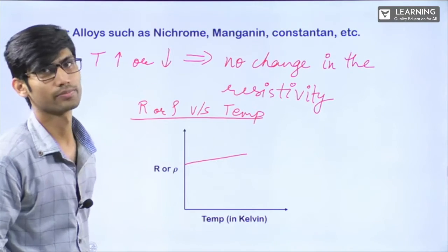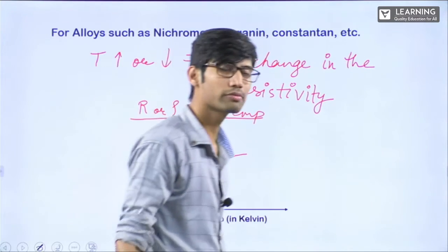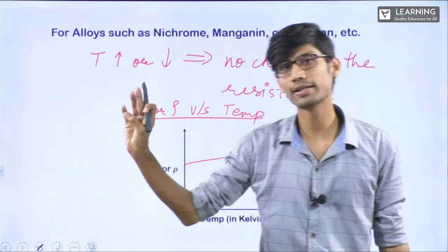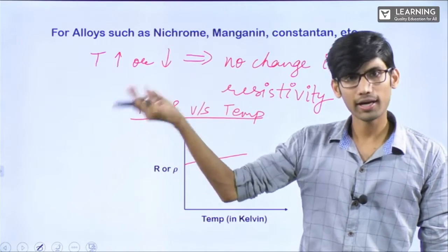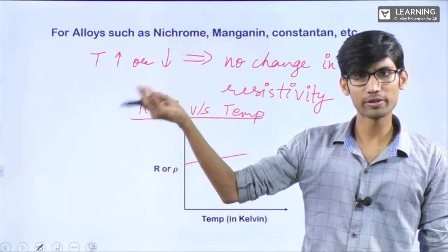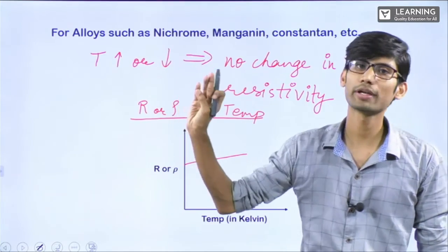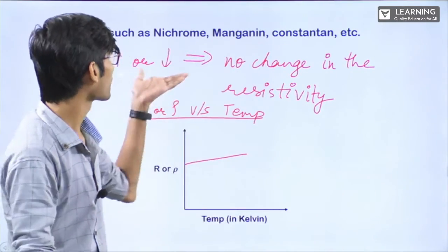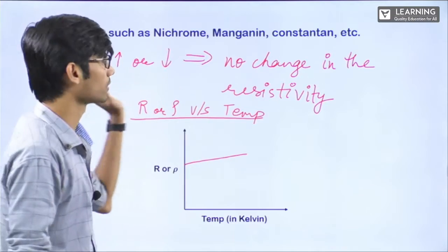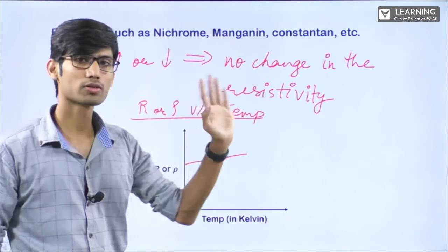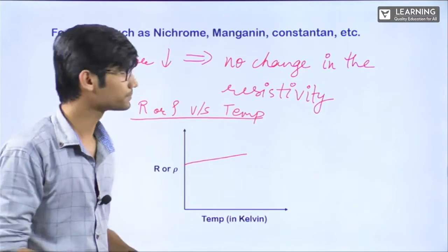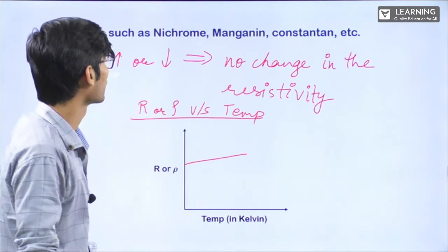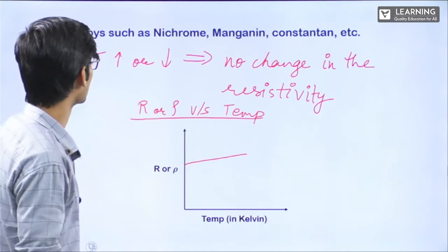For these alloys, I hope you understood. We discussed how resistivity is affected in conductors, in semiconductors, and in certain alloys as temperature changes. If I talk about insulators, resistivity doesn't change there because they are insulators.